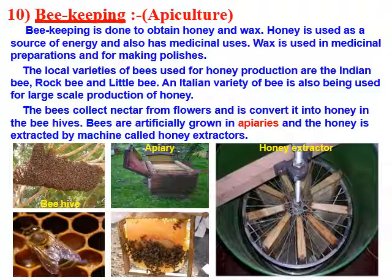Beekeeping, or apiculture, is done to obtain honey and wax. Honey is a source of energy and has medicinal values; wax is used in medicinal preparations, polishes and cosmetic products. Local varieties of bees used for honey production are the Indian bee, rock bee and little bee. An Italian variety of bee is used for large-scale honey production. Bees collect nectar from flowers and convert it into honey in the beehives. Bees are artificially grown in apiaries and honey is extracted by a machine called a honey extractor.